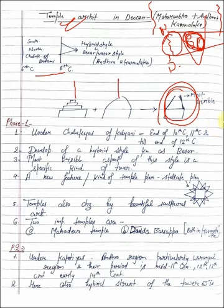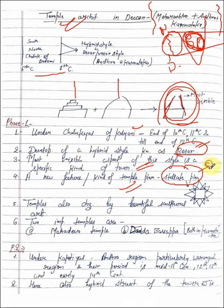Under Chalukyas of Kalyani, end of 10th century, 11th century till end of 12th century. Development of hybrid style which we call Vesara. Most visible aspect of this style is specific kind of tower, a different type of tower. Temples also characterized by beautiful sculpture art. Two important temples are Mahadeva temple and Dandvasappar temple, both in Karnataka.